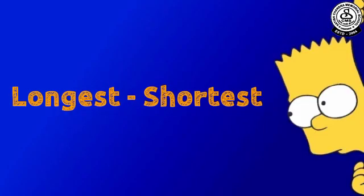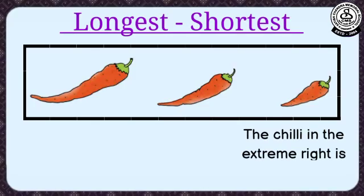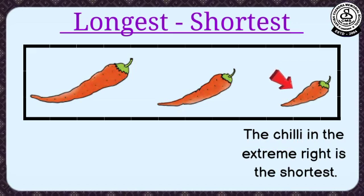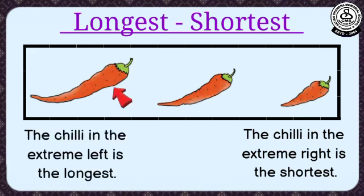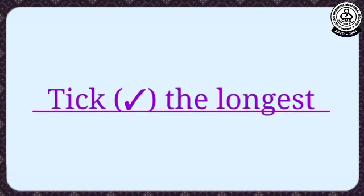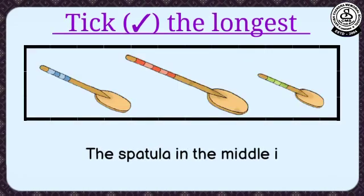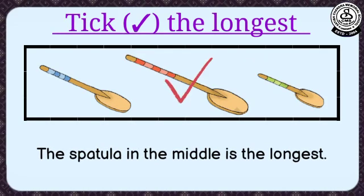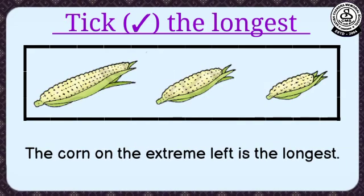Longest, shortest. The chili in the extreme right is the shortest. The chili in the extreme left is the longest. Tick the longest. The spatula in the middle is the longest. The corn on the extreme left is the longest.